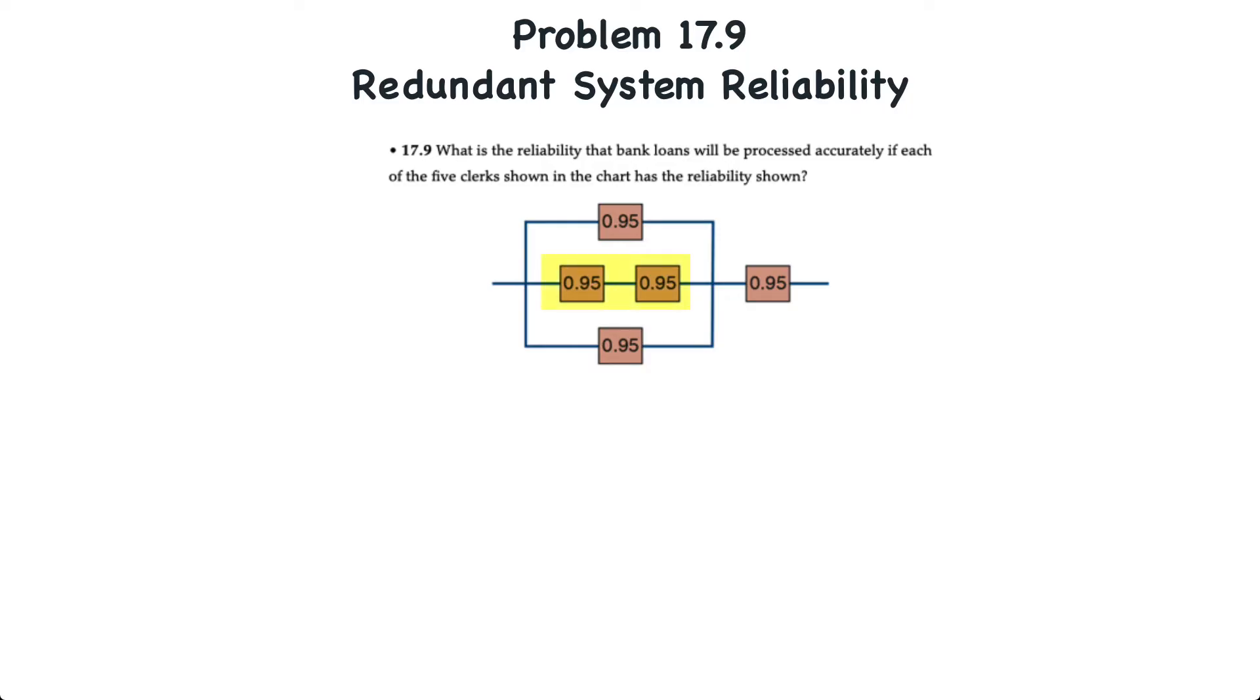The first step is to take the two clerks that are in series inside the box and multiply those to come up with the reliability of that series. We can say that these two clerks comprise a subsystem in series.